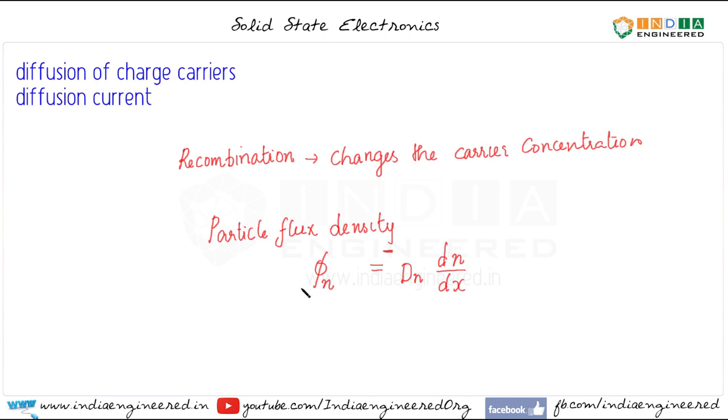By multiplying the particle flux density by the charge of that particle, we can get the current density due to diffusion. j_n is the current density due to diffusion. We need to multiply it with the charge of the carrier. The charge of an electron is minus q. So we have minus q times minus D_n, the diffusion coefficient, times the concentration gradient dn/dx. What we get finally is q times D_n times dn/dx.